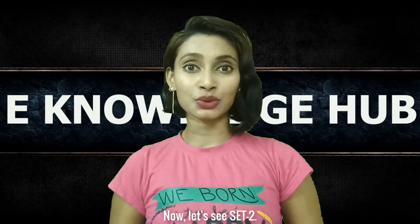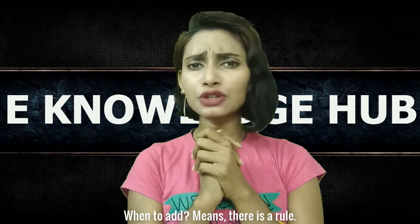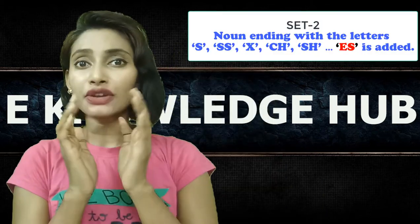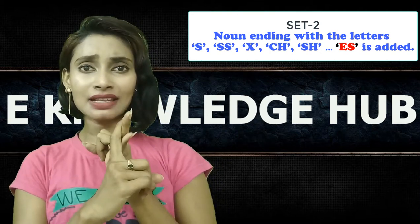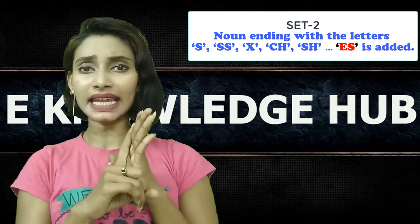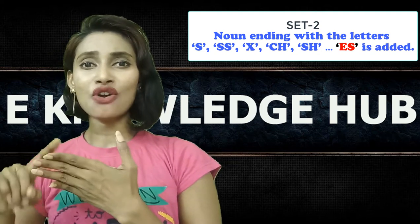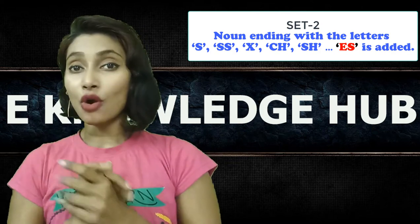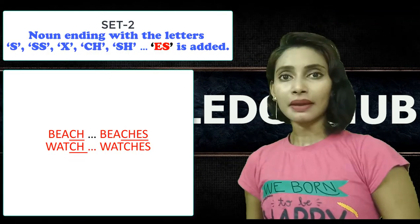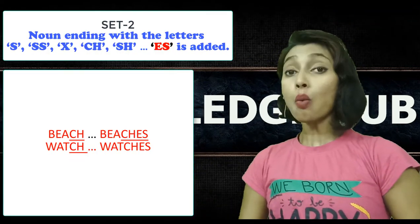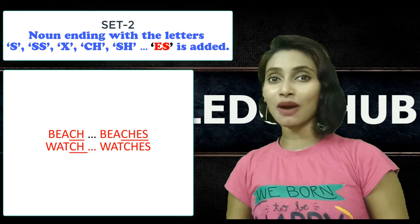Now let's see set 2. Sometimes we add ES to form the plural. The rule is: if a singular noun ends in S, SS, X, CH, or SH, then we have to add ES to form plurals. For example: beach, beaches; watch, watches. These words end in CH and we added ES to form the plural.